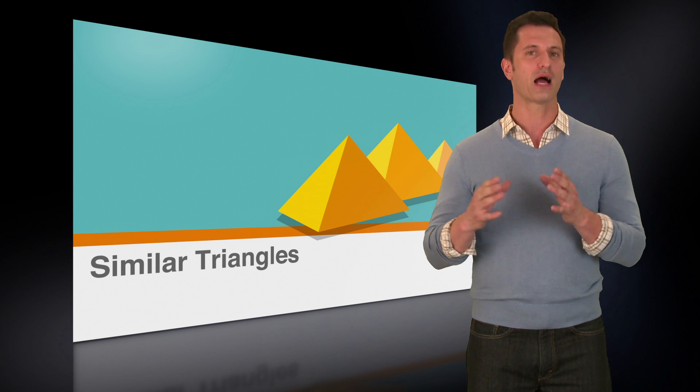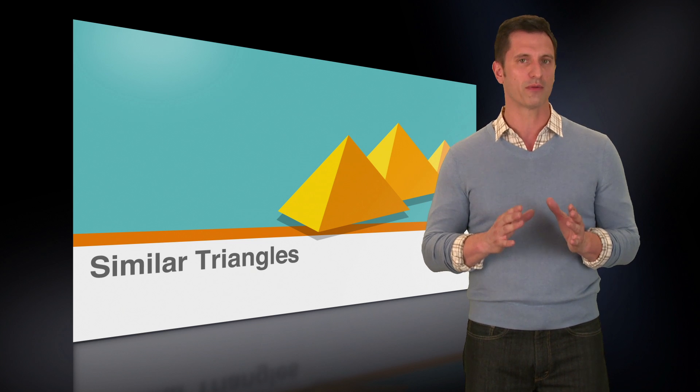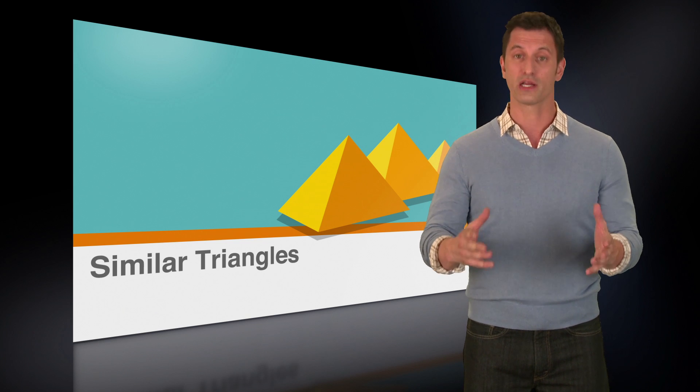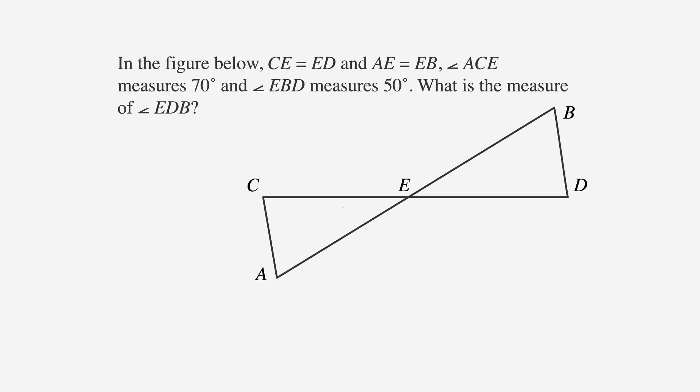Now let's apply these theorems to an ACT problem. This one involves proving triangle congruence. In the figure below CE equals ED and AE equals EB. Angle ACE measures 70 degrees and angle EBD measures 50 degrees. What is the measure of angle EDB? F is 40 degrees, G is 50 degrees, H is 60 degrees, J is 70 degrees, and K is cannot be determined from the given information.